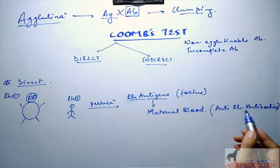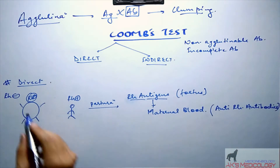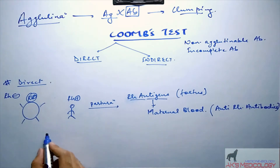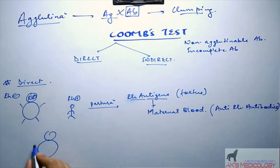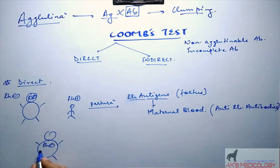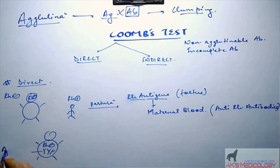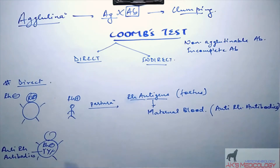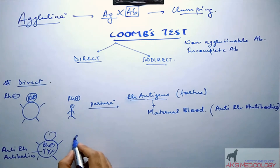These anti-Rh antibodies remain inside the maternal body or maternal circulation forever. Now, if this woman is pregnant again — she is Rh negative and now also possesses anti-Rh antibodies — she is again pregnant with a fetus who is Rh positive.